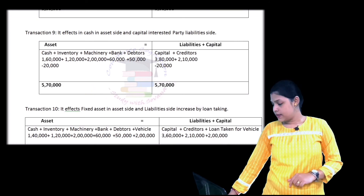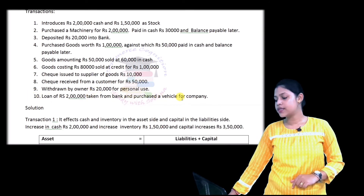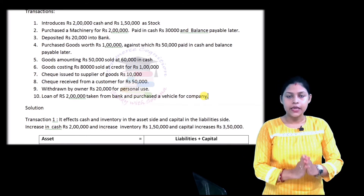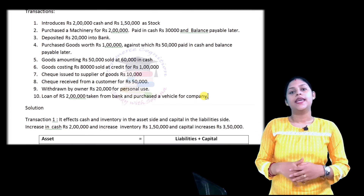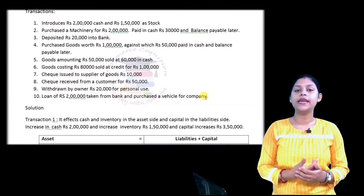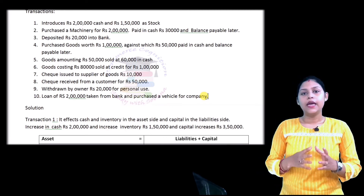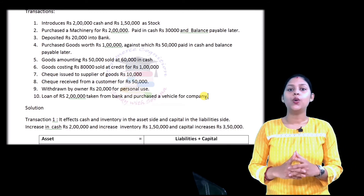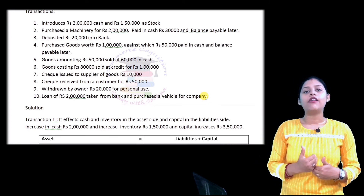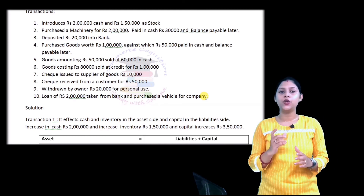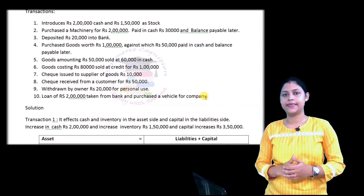Transaction 10: loan of Rs. 2 lakh taken from bank and a vehicle purchased for the company. The vehicle is a fixed asset, so assets increase by Rs. 2 lakh. The bank loan is a liability because it must be repaid in the future, so liabilities increase by Rs. 2 lakh. Assets equal liabilities plus capital.